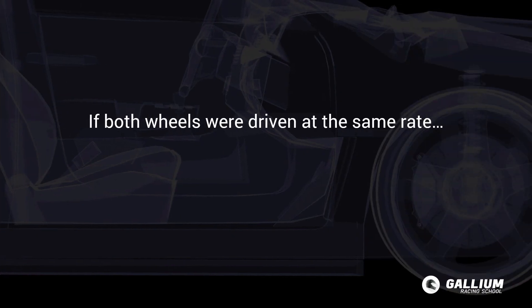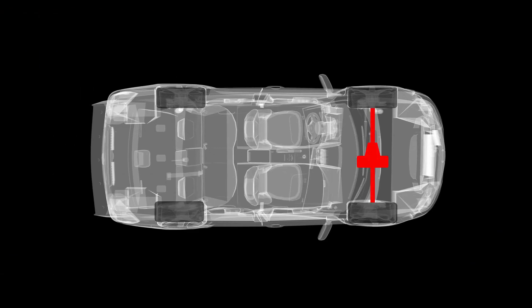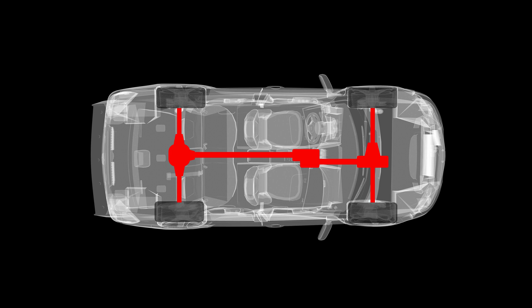If both wheels were driven at the same rate then the outside wheel would be dragging or skidding. You'll have a differential for each set of drive wheels — one in the front for front wheel drive or one in the rear for rear wheel drive. All wheel drive cars have both, plus a centre differential that controls front to rear torque split.